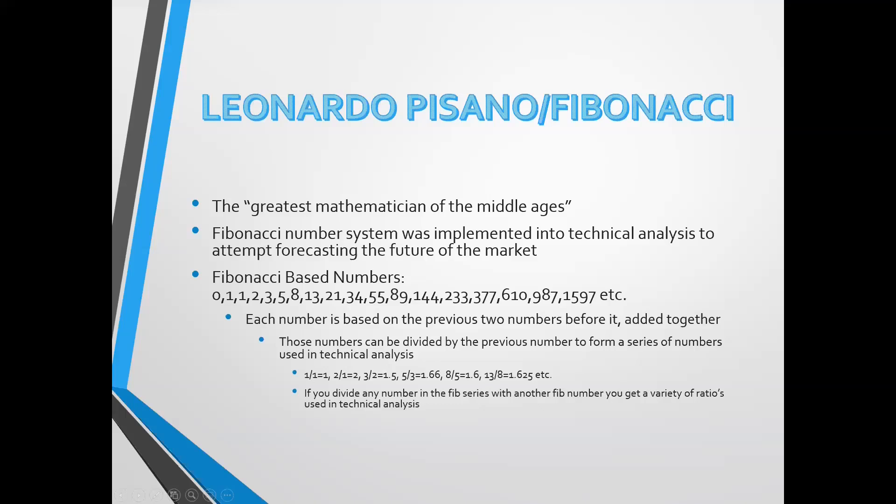So Fibonacci, the greatest mathematician of the middle ages. The Fibonacci number system was implemented into technical analysis in an attempt to forecast the future of the market. Like any trader, the only way to really benefit from the financial markets is to understand what it's going to do in the future, because obviously we can't make any great decisions from things that have already happened. So we're trying to forecast what's going to happen in the future, and this is one of the means of doing that.